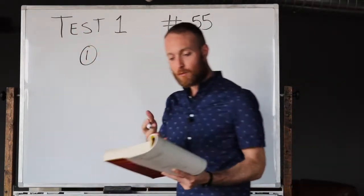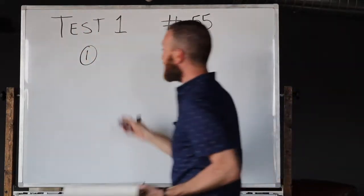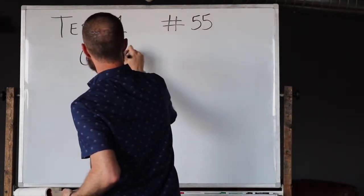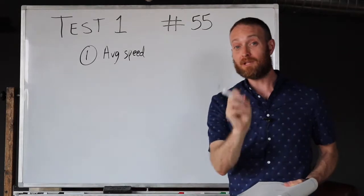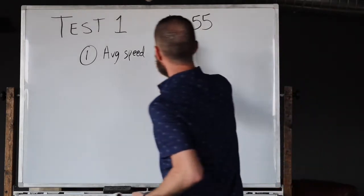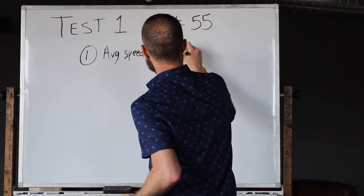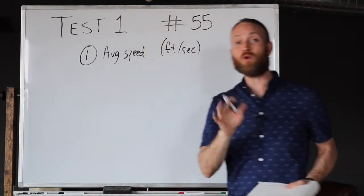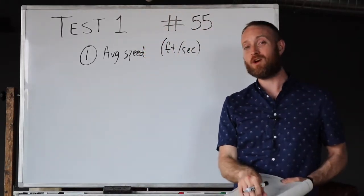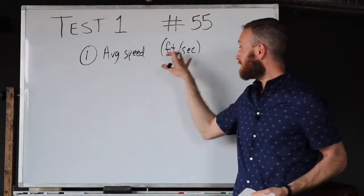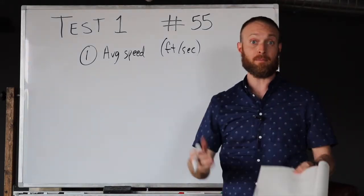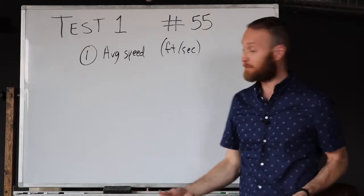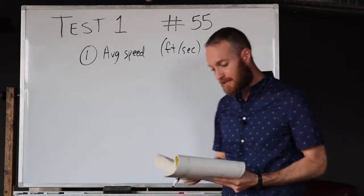As we're looking at this, we've got a word problem, so let's implement Torch Prep's word problem strategy. First, we're trying to find what am I trying to find. We read the problem once through and we're trying to find the average speed, but they give us units that matter here and we need to pay attention to this: feet per second.